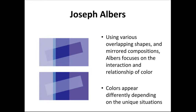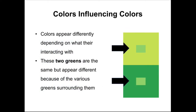What he believed is that colors appear differently depending on the unique situations that they're in, usually dictating on what colors are surrounding other colors. Here's an example: even though these two small green squares are identical in color, they appear very differently because the top square is surrounded by a lighter version of green and the bottom one is surrounded by a darker version of green. Those inside green colors appear differently because of what's surrounding them, although they are the exact same hue.